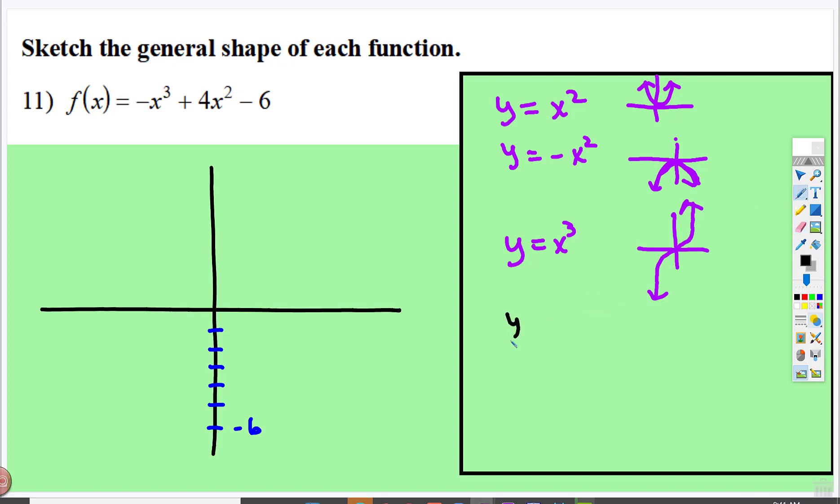If you have y equals negative x cubed, the negative sign means it's reflected over the x-axis. So if this is negative, this part is now coming down. This part is going up. It's been reflected.